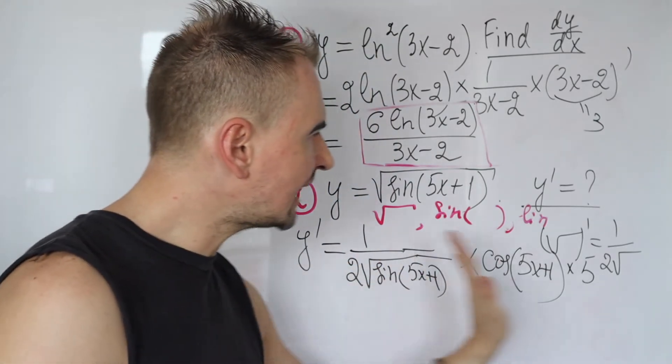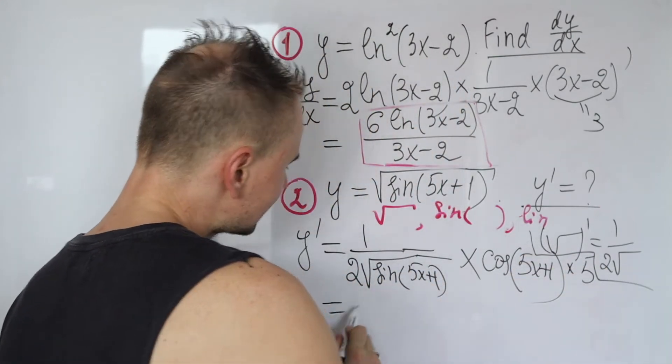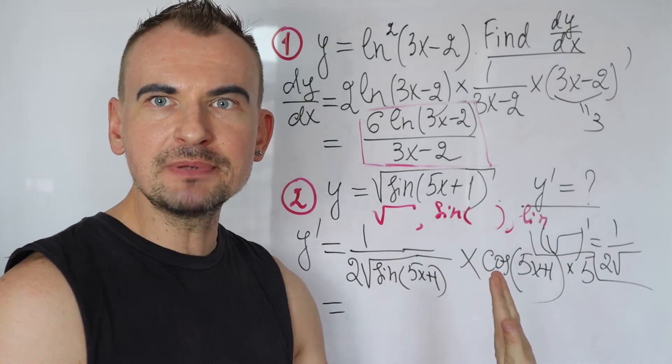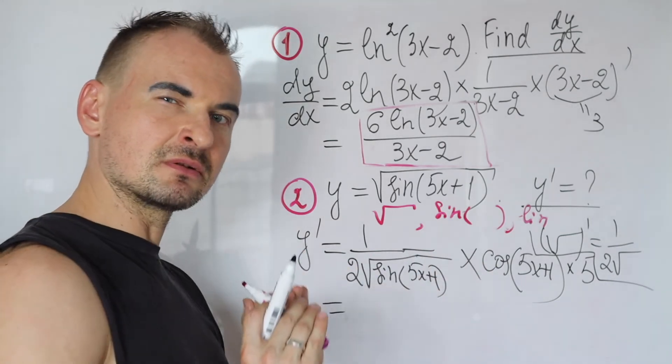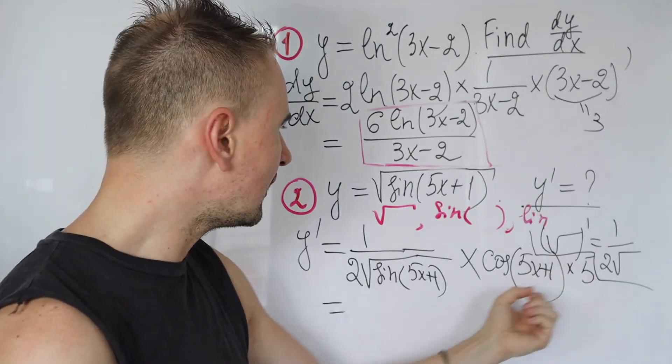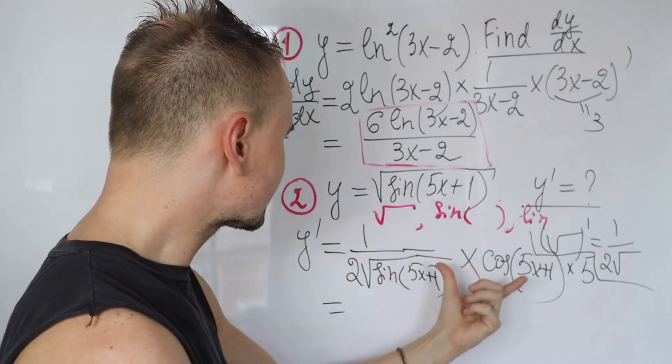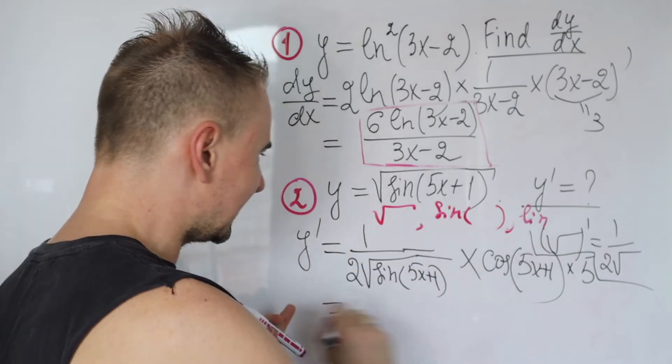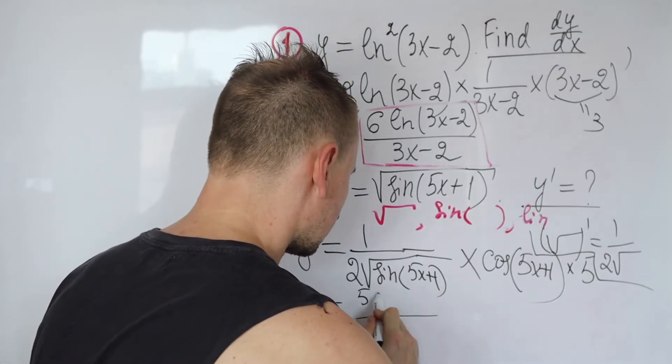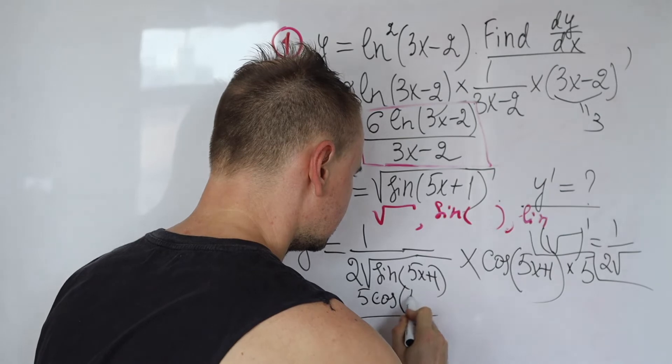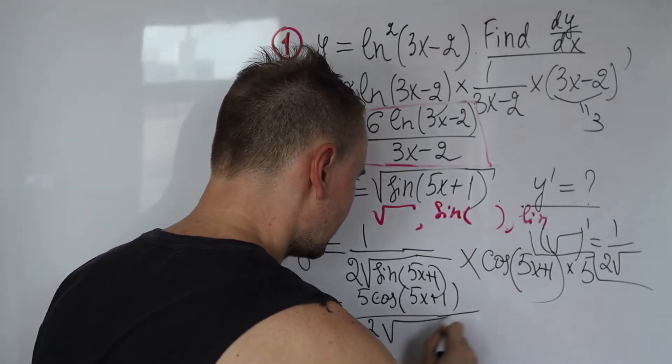Now we are done with all these derivatives. Just the last step, just clean it up a little bit, slick it up. Use some algebra to make it more simpler. So 5 goes on top, cosine goes on top. Let me write it as a fraction, 5 cosine of 5x plus 1 over 2 root of sine 5x plus 1.